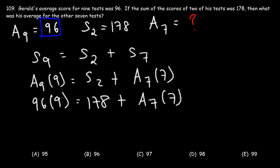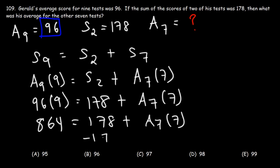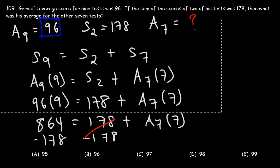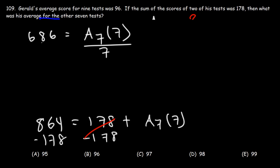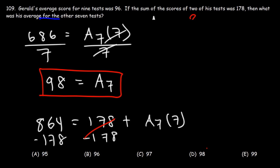96 times 9 is 864. Subtracting 178 from both sides: 864 minus 178 equals 686, so a7 times 7 equals 686. Dividing both sides by 7, we get 686 divided by 7, which is 98. The average of the other seven exams is 98. Answer D is correct.